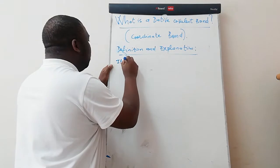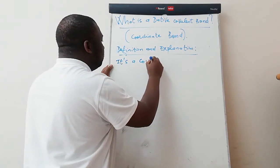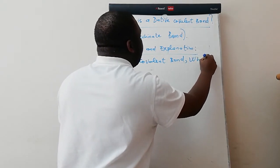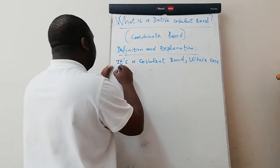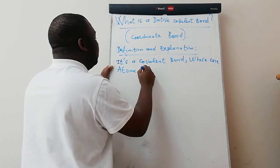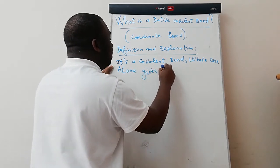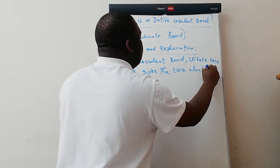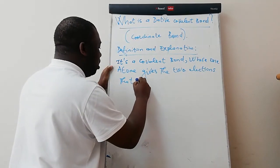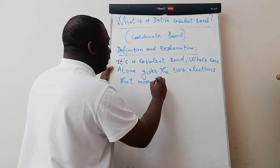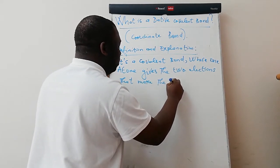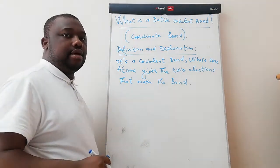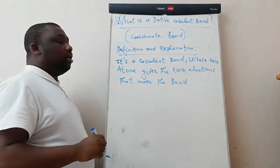It's a covalent bond where one atom gives the two electrons that make the bond. This is the simplest definition ever on dative covalent bond.